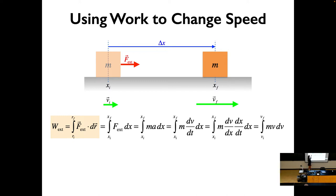Now you just have this integral of dx. Remember, force equals mass times acceleration, so we sub in mass times acceleration. Now we do some fancy things with chain rule — chain rule is so useful. We can call acceleration dv/dt. We also have dx, and using chain rule we write this as dv/dx times dx/dt, which is the same thing as dv/dt.